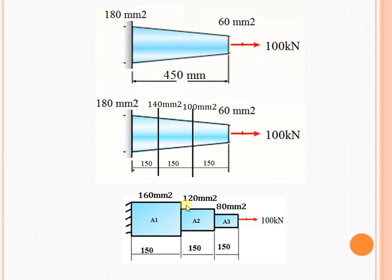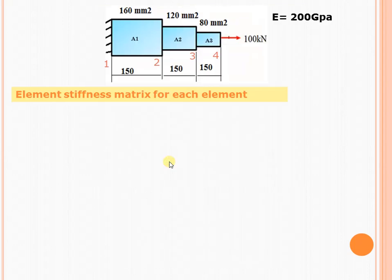After converting the taper bar into step bar, we have to find out the elemental stiffness matrix for each element. As there are three elements, we have to write the nodal connectivity. Element 1 is connected between node 1 and 2, element 2 is connected between node 2 and 3, and element 3 is connected between node 3 and 4. The first node is fixed.